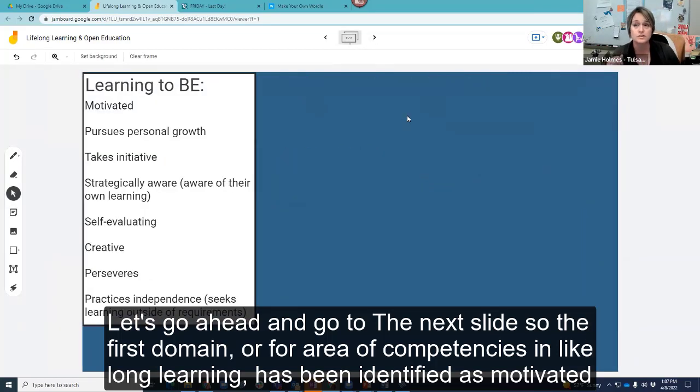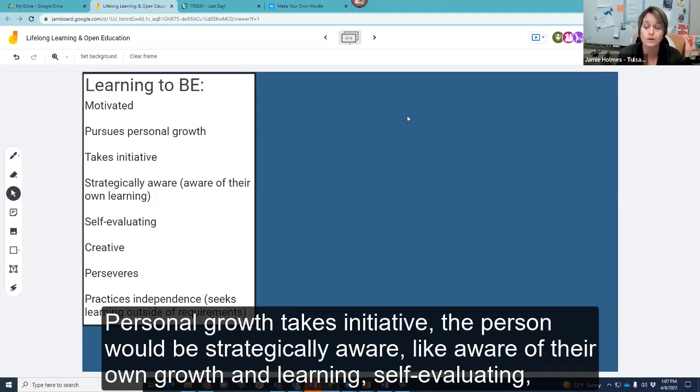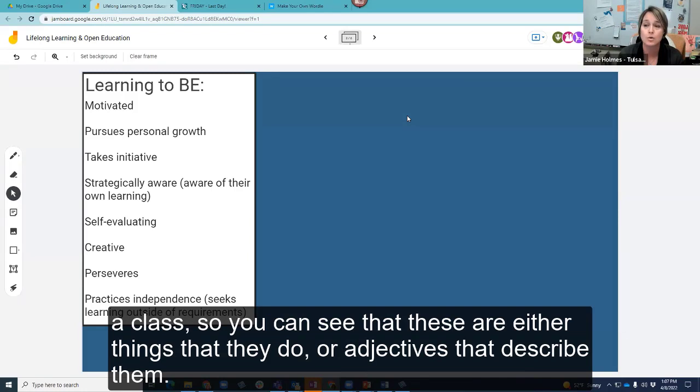Let's go ahead and go to the next slide. So the first domain or area of competencies in lifelong learning has been identified as motivated, pursues personal growth, takes initiative. The person would be strategically aware, like aware of their own growth and learning, self-evaluating, creative, perseveres, and practices independence. In other words, seeking learning beyond what is required of them for a job or a class.